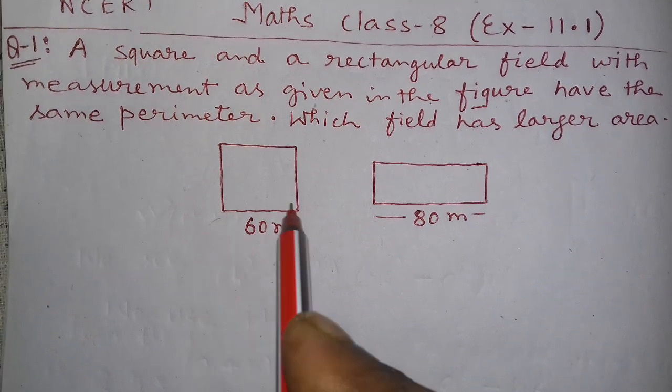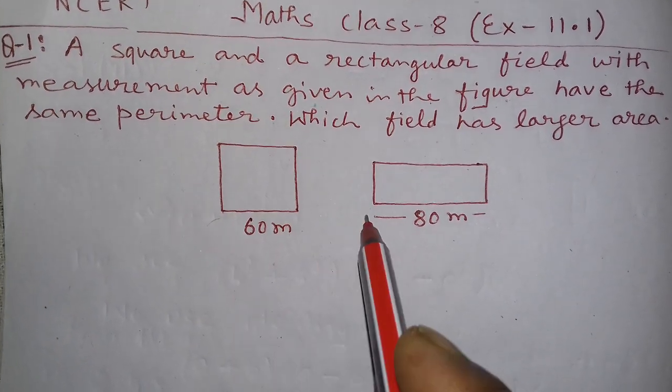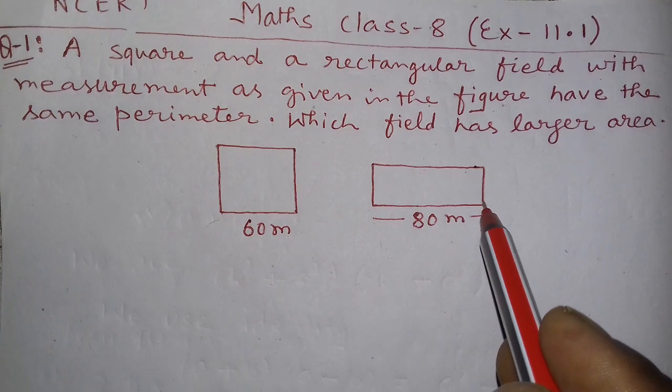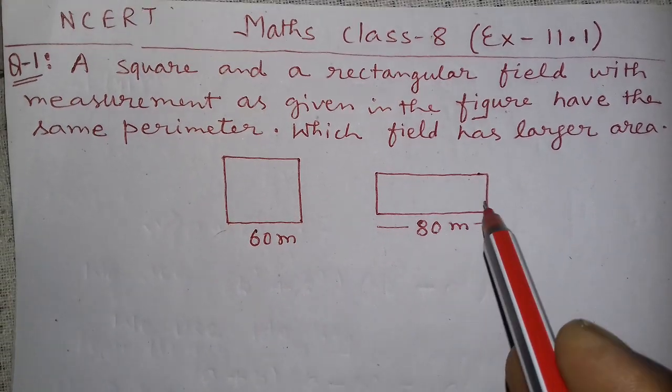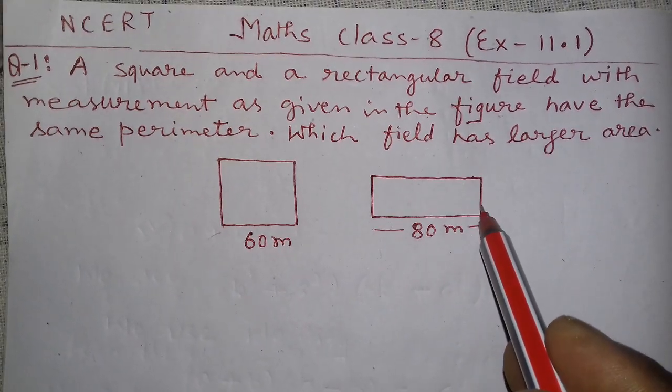Here side of square is 60 meter and the length of rectangle is 80 meter. Breadth is not given.